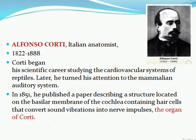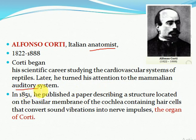In the chapter introduction we have a little introduction to Alphonso Corti. Alphonso Corti was an Italian anatomist. The word anatomist comes from anatomy, and anatomy is the study of internal structure. He was born in 1822 and died in 1888. He studied the cardiovascular system, reptiles, and then mammals' auditory system in 1851. He published a paper in which he described the basilar membrane of the cochlea.